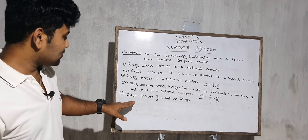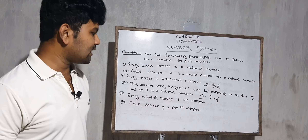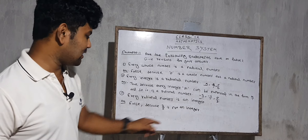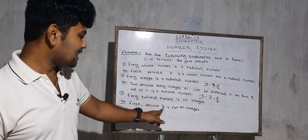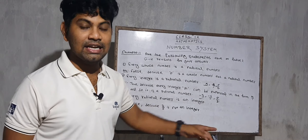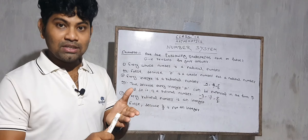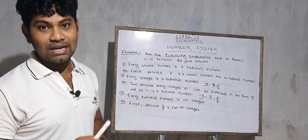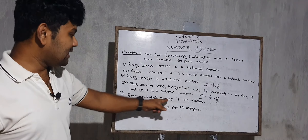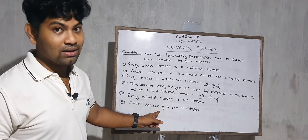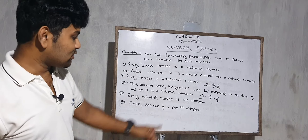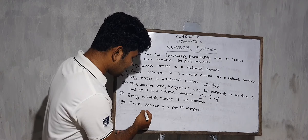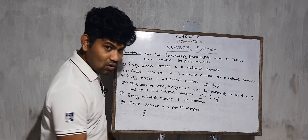Question number 3: every rational number is an integer. This is FALSE. Because 3 by 5 is not an integer. Integers are all positive and negative whole numbers — fractions are not integers. 3 by 5 is a rational number but not an integer. Any fraction you can write is not an integer.